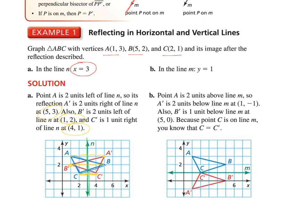For part B, I'll reflect the triangle in line M — y equals 1. Now where is C going to go? It's not going to go anywhere because it lies on the line. Let's see what happens with A. A is two units away vertically from the line, so it's going to be two units away on the other side — giving us (1, negative 1). And B is one unit away from the line, so it ends up one unit away on the other side: (5, 0). That's all there is to it. It's a really easy concept once you get it.